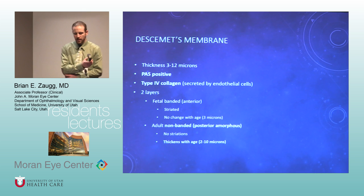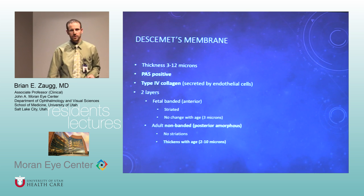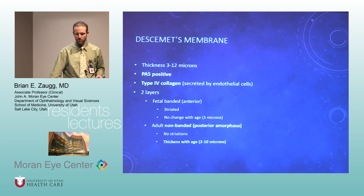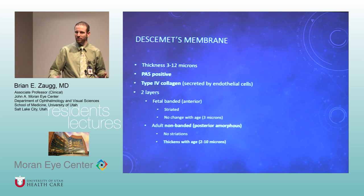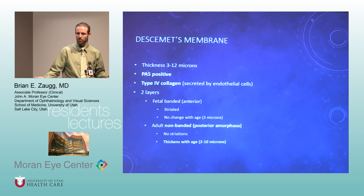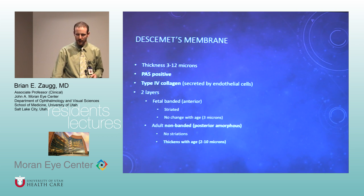Descemet's membrane is pretty thin — 3 to 12 microns. They like to separate the fetal banded anterior part from the adult non-banded posterior part. This is a PAS-positive basement membrane, so it's type 4 collagen.